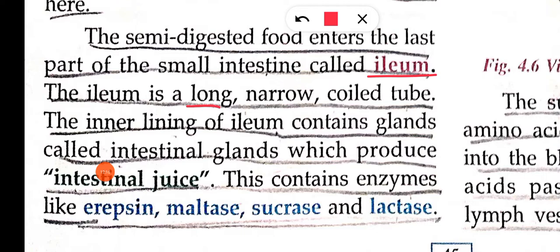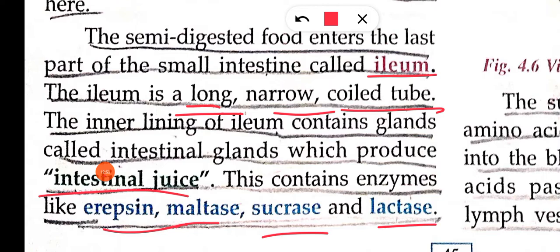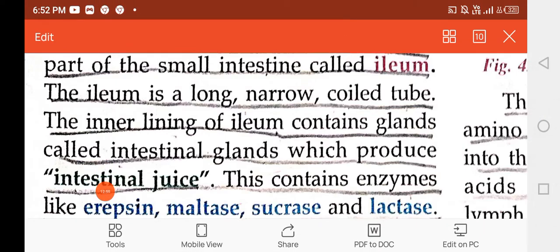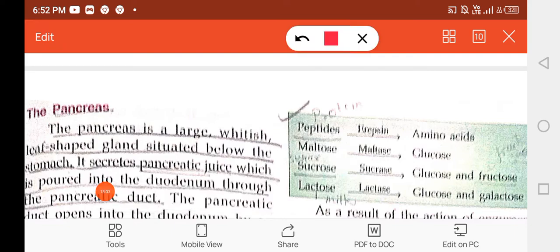The ileum is a narrow, long coiled tube — it is very long but narrow. The inner lining of the ileum has glands called intestinal glands, which secrete intestinal juices.